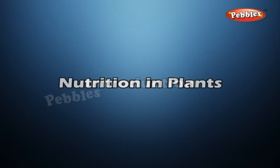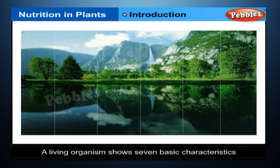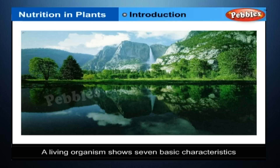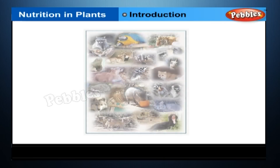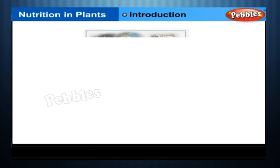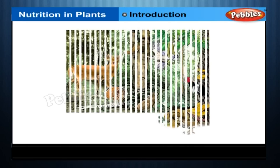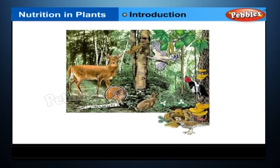Nutrition in Plants Introduction. A living organism shows seven basic characteristics that differentiate it from a non-living one. These characteristics are called life characteristics because together they ensure that an organism continues to live. Though all living organisms show these characteristics, there are clear differences in the manner plants and animals carry them out. In this chapter, we will learn about nutrition, most specifically, nutrition in plants.